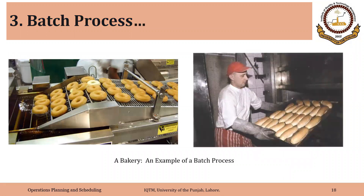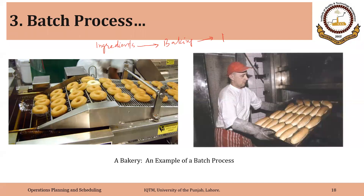A classical example of a batch process is a bakery. We have similar equipment or processes. For example, let's suppose we have three steps: we mix ingredients as one step, then the second step might be baking, and the third step might be packing.